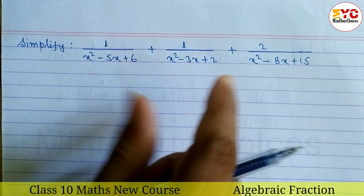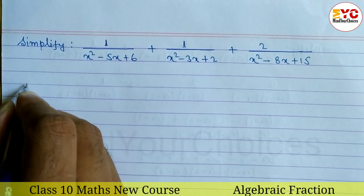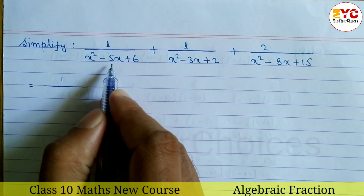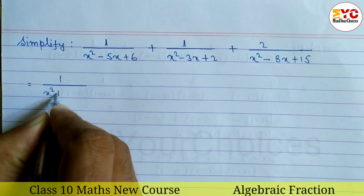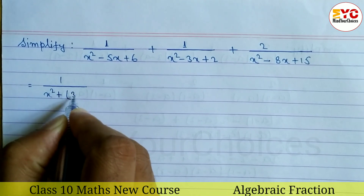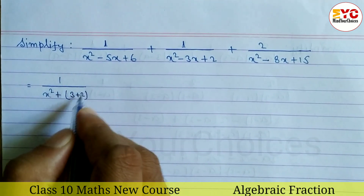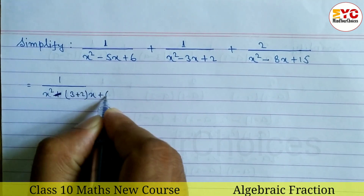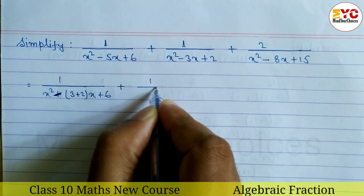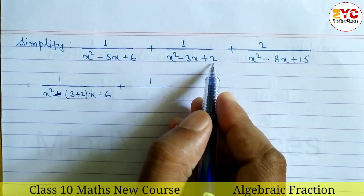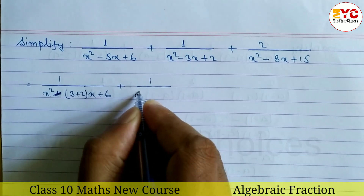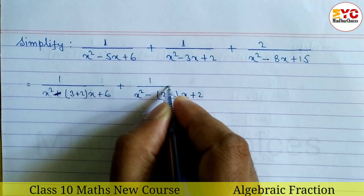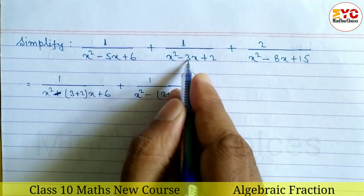Let's factorize the first denominator. 1 divided by (x² − 5x + 6): multiply 6 and add 5. We can write 3 plus 2 — because 3 times 2 is 6, and 3 plus 2 is 5. So the factors come from splitting the middle term using 3 and 2.